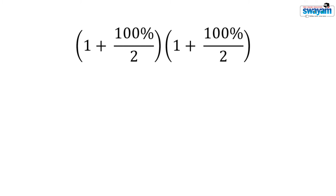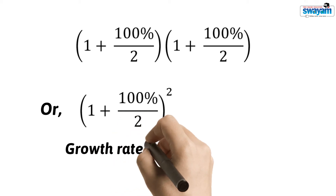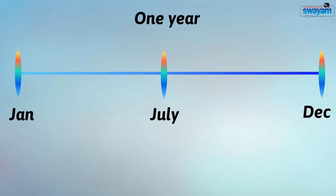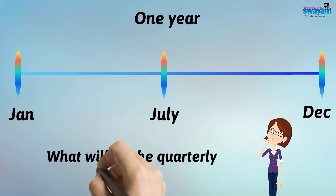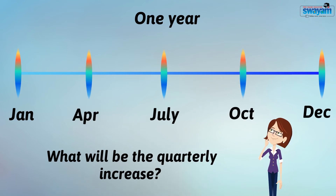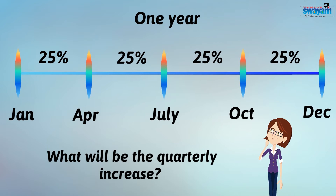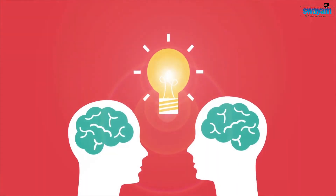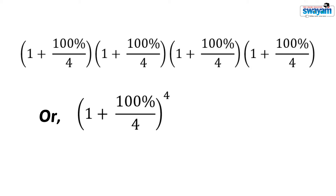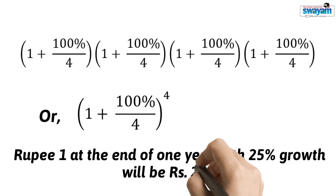This process can be mathematically expressed as the growth rate divided into half over 2 time periods. Suppose you want to find the quarterly increase in your money — divide a year into 4 parts and divide 100 percent into 4 parts, giving 25 percent each quarter. The formula will now be written as 100 percent divided into 4 parts for 4 time periods, giving Rs. 2.44.